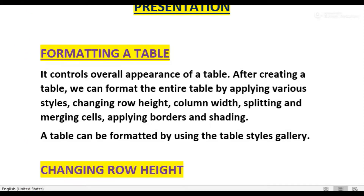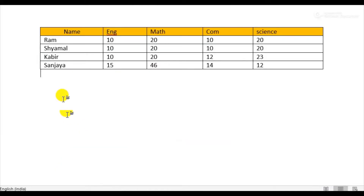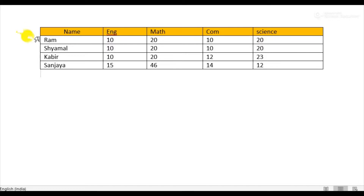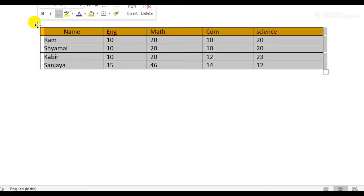Suppose we have a table and we want to change its appearance using the Table Styles Gallery. For doing that, first of all we have to select the table. We can see the table handle — simply click on it and the whole table will be selected.